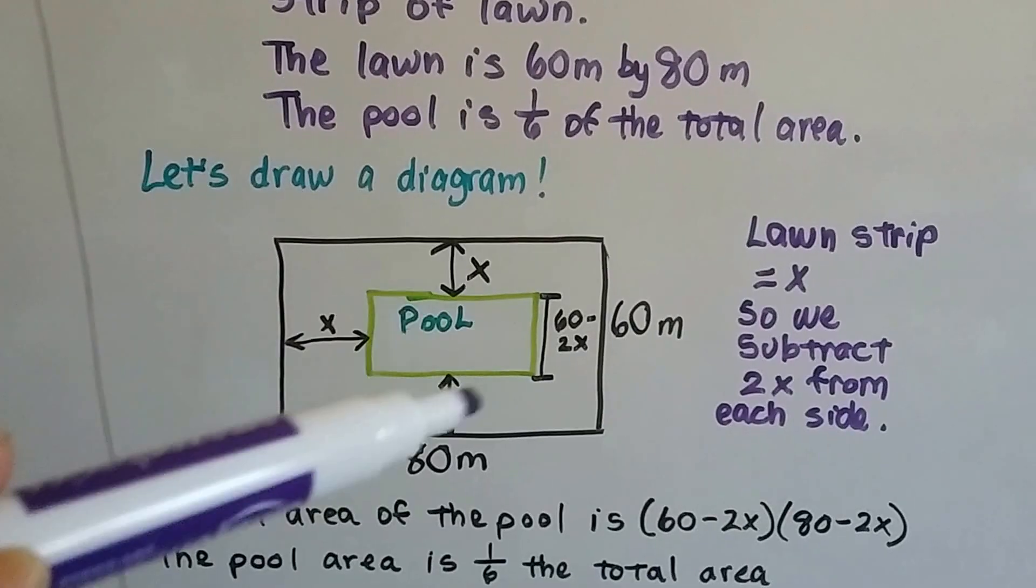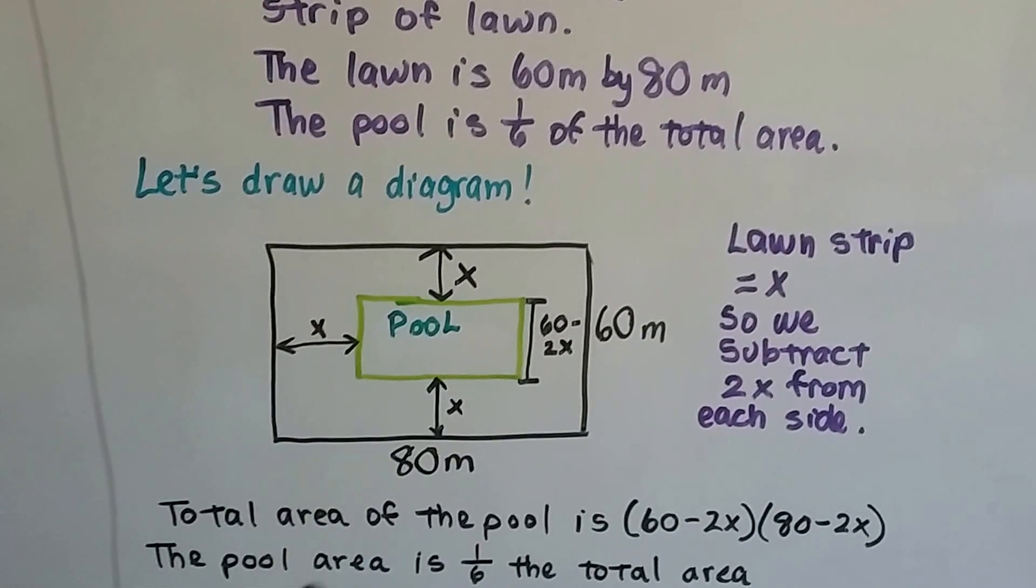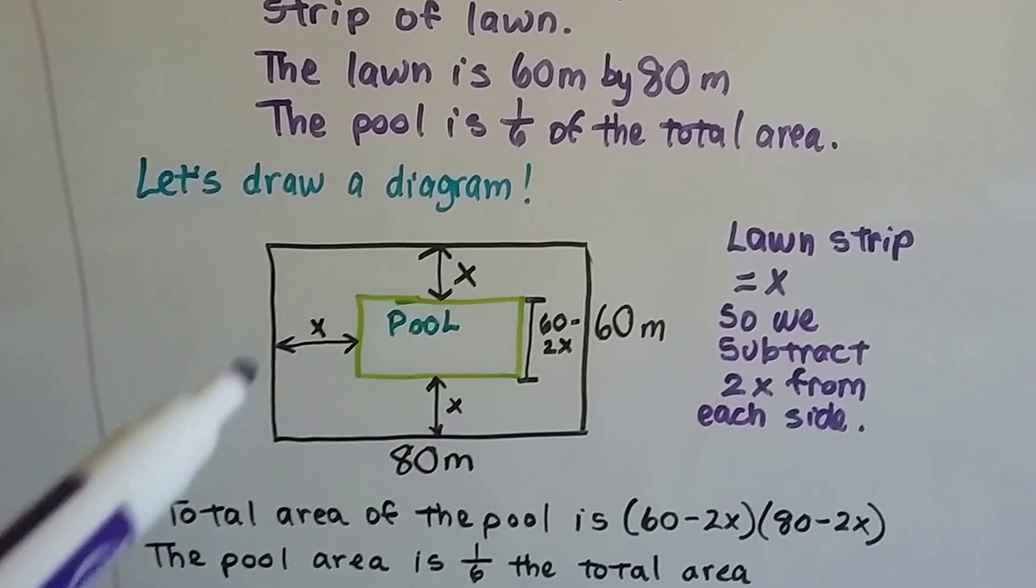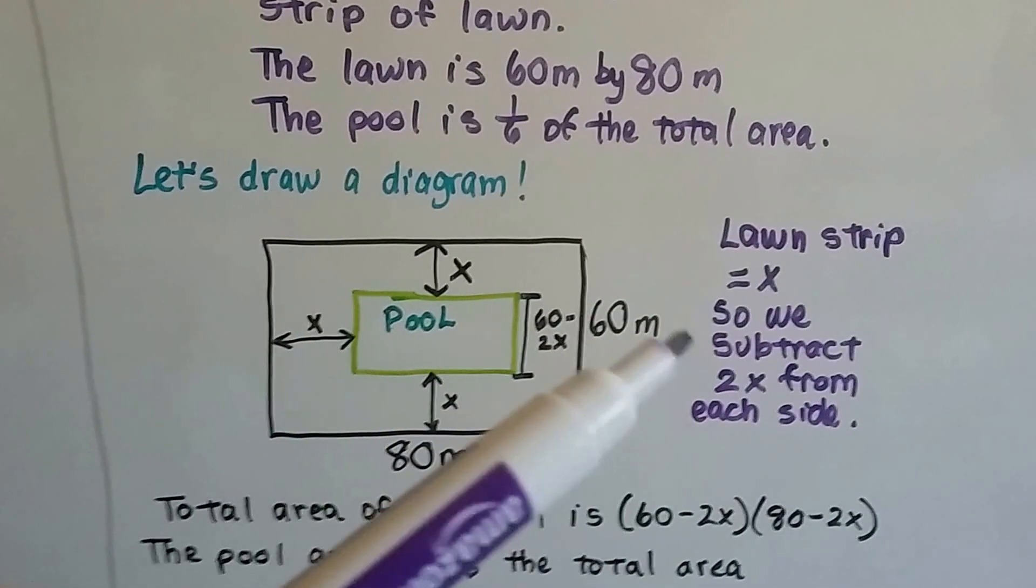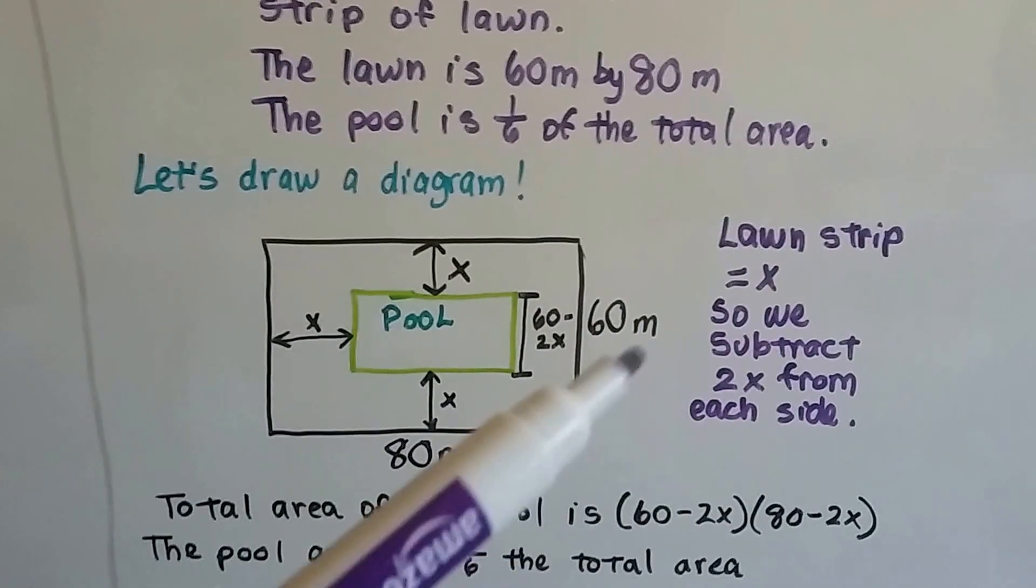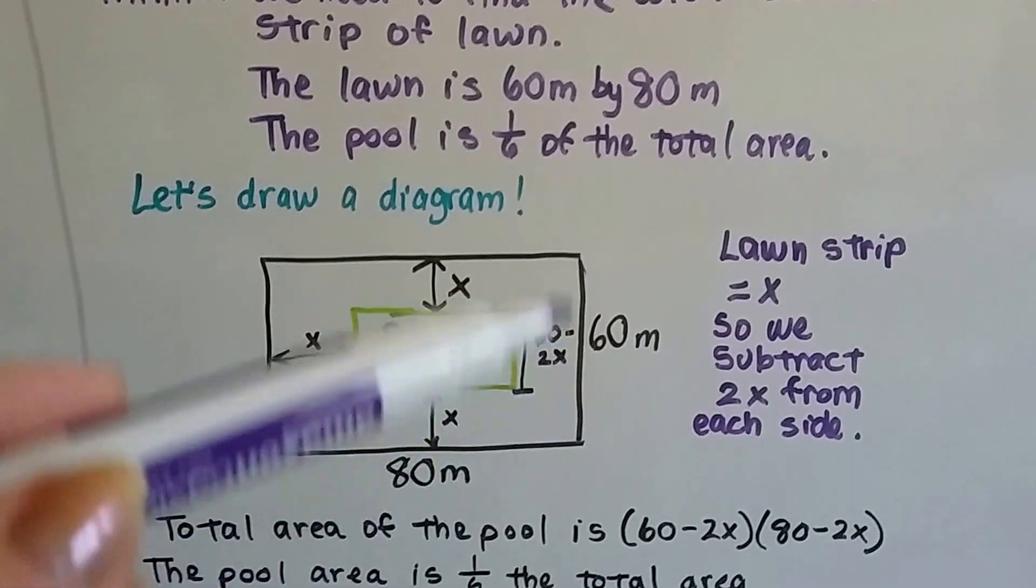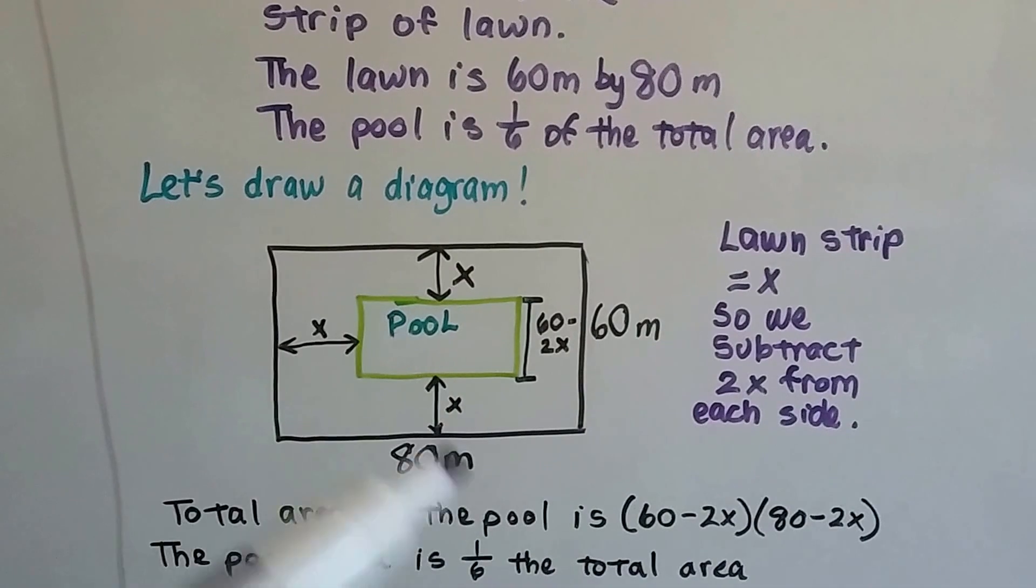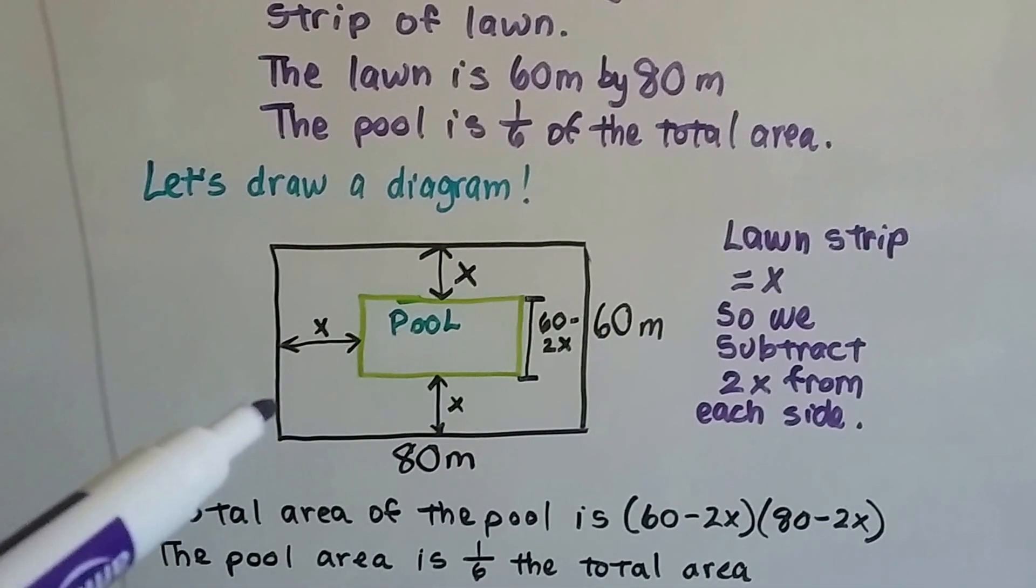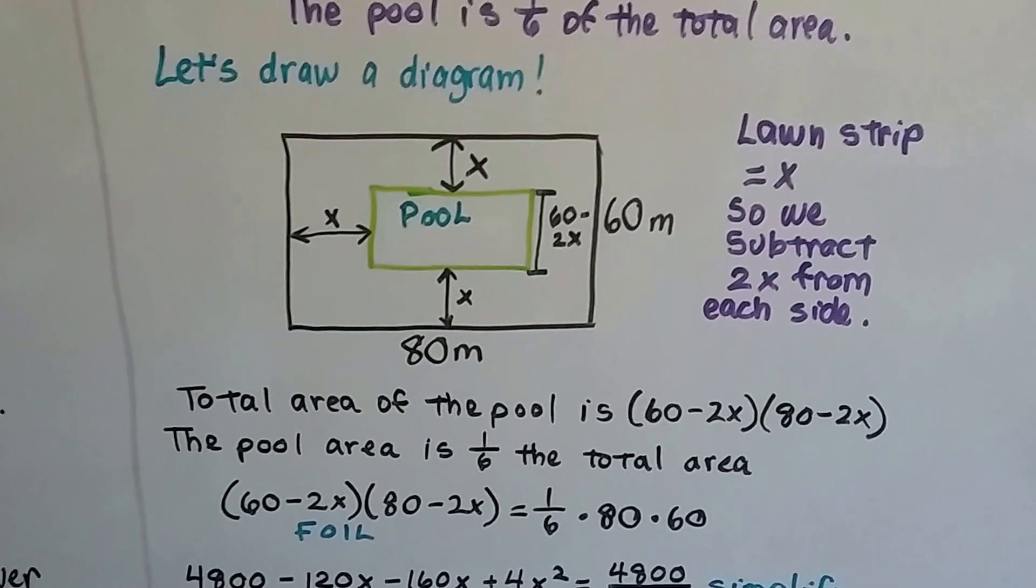All the way around, that's x. On this side we have x, and on this side of the pool we have x, so that's 2x. On the 80 meter side, we've got this is x and this is x. So we're going to subtract 2x from each side. This is going to be 60 minus 2x. This is going to be 80 minus 2x.